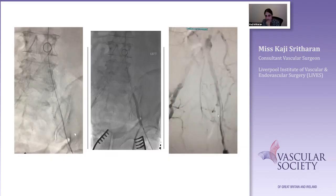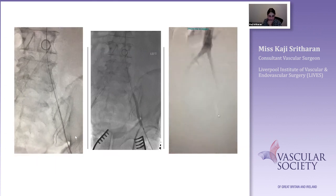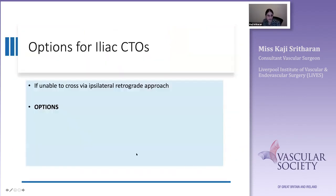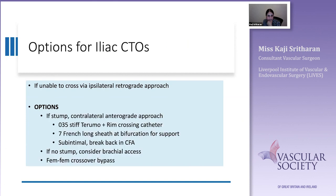Once the lesion was crossed, a 7 French long sheath was taken up to the top of the bifurcation, and a balloon-mounted covered stent — a Viabahn — was deployed and post-dilated, giving a good final result. If you have an iliac CTO and cannot cross it from the ipsilateral approach, think about the contralateral antegrade approach — use an 0.035 platform with a Rim catheter, a long 7 French sheath for support, and try sub-intimal re-entry at the common femoral. Other options include brachial access or a fem-fem crossover.